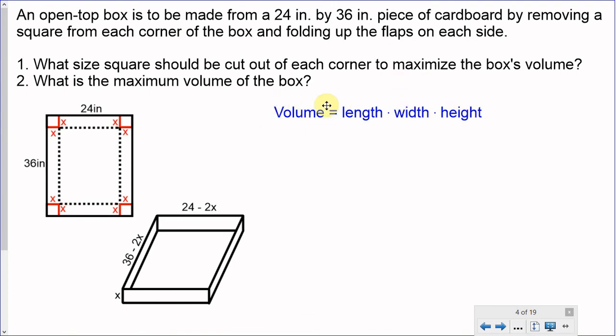So, the volume is the thing that we are trying to maximize. We're going to call that V(x). Do we have the length? Yes, we do. Do we have the width? Yes, we do. And do we have the height? Yes, we do. So, let's find our volume function. And there it is. V(x) is equal to (36 - 2x) times (24 - 2x) times x.